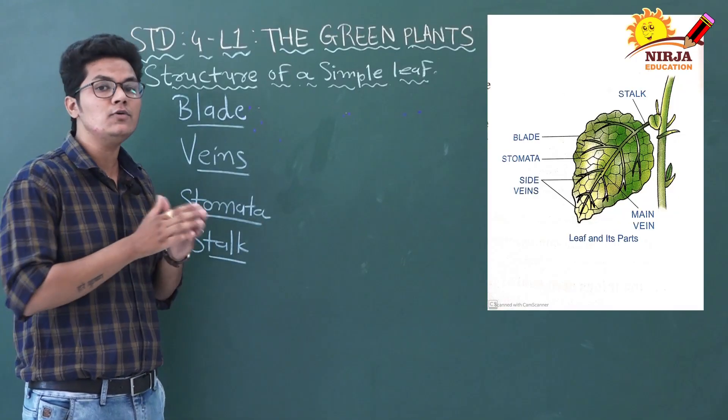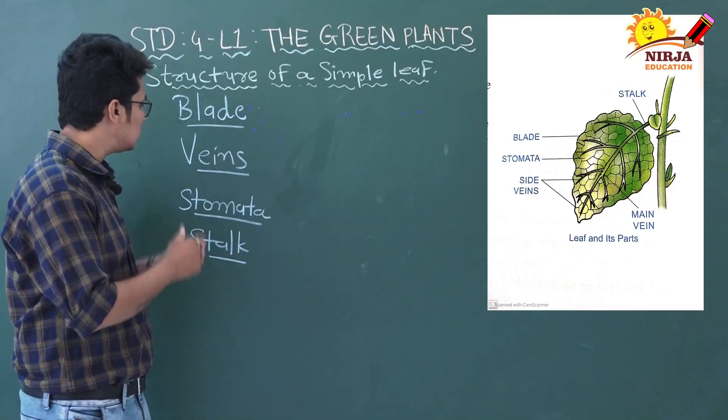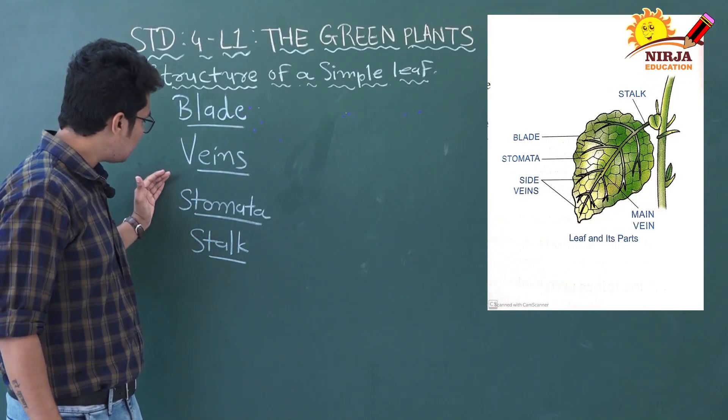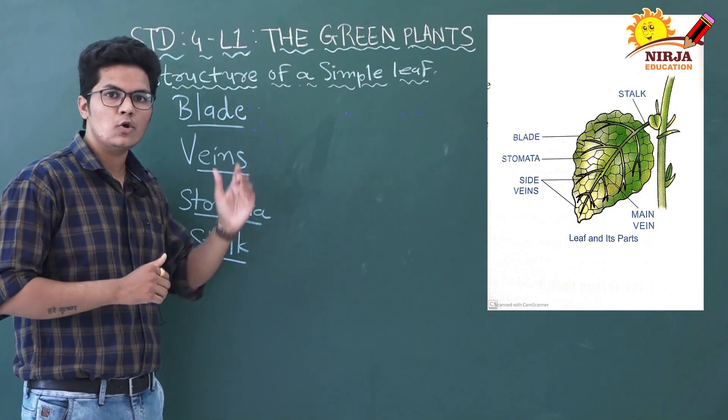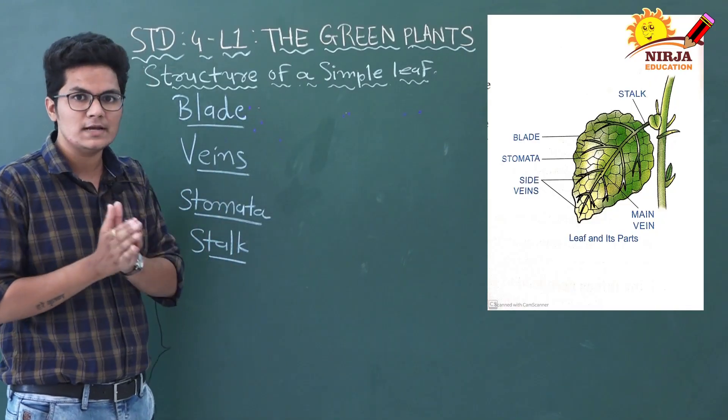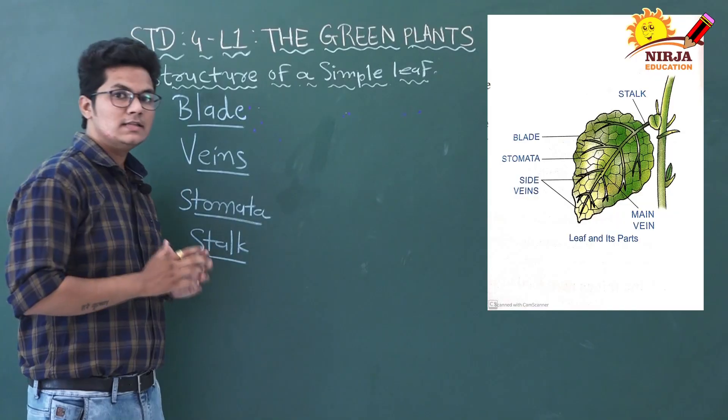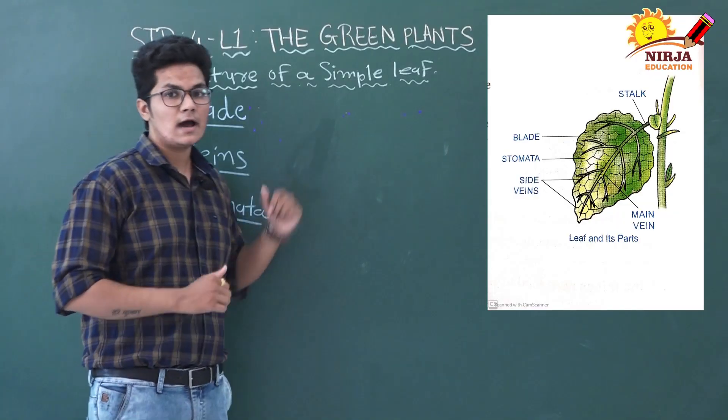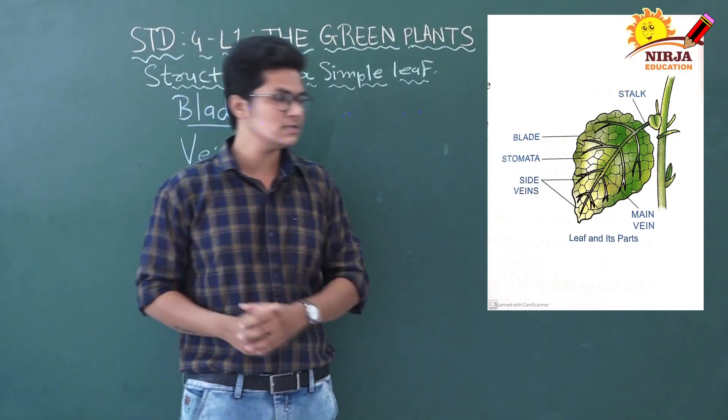Just like this, veins carry water and minerals to different leaves. Stomata - there are a number of openings on the lower side of a leaf, those openings are called stomata. The leaf is attached to the stem with a stalk. These are the parts of a leaf. This is the structure of a simple leaf.